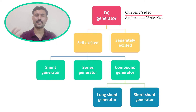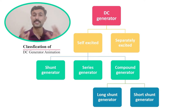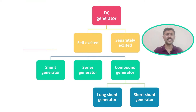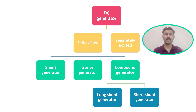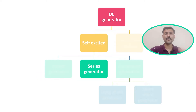This is the classification of DC generators. In the previous video we discussed this classification with animations of circuit diagrams as well as separate wiring diagrams for all the different types of DC generators. The link to that video is in the description box below and in the top right corner. Previously we saw the applications of the separately excited DC generator; here we are going to discuss the applications of the series DC generator.